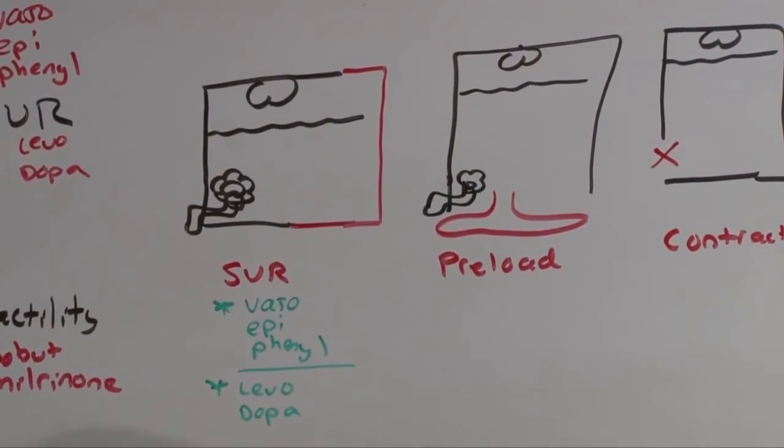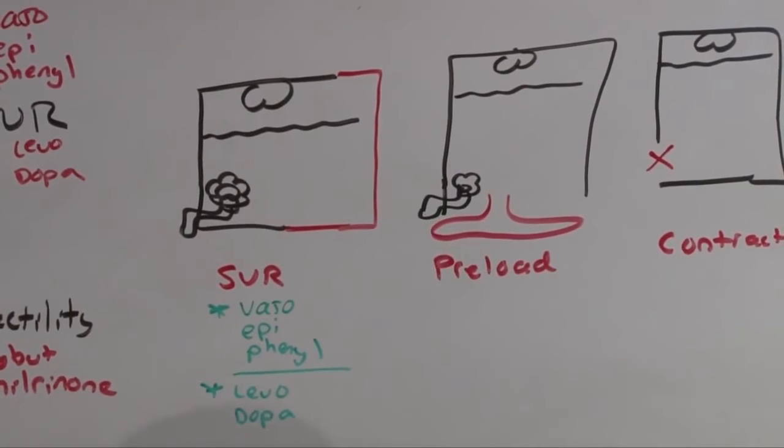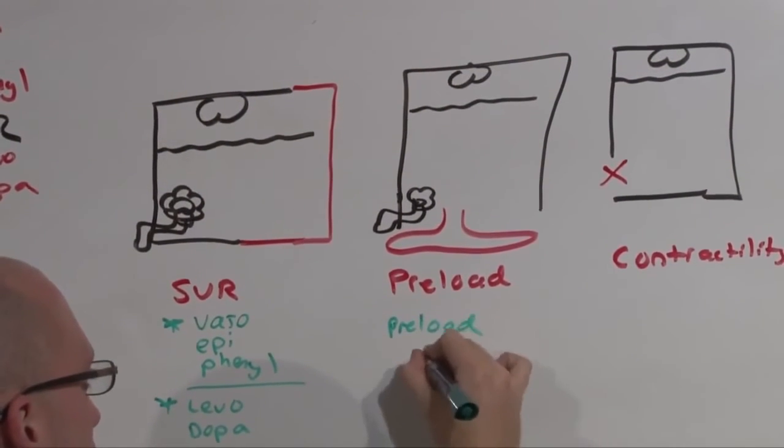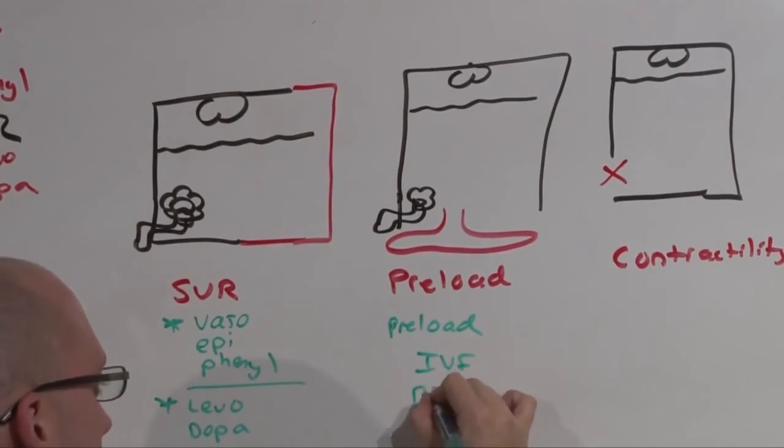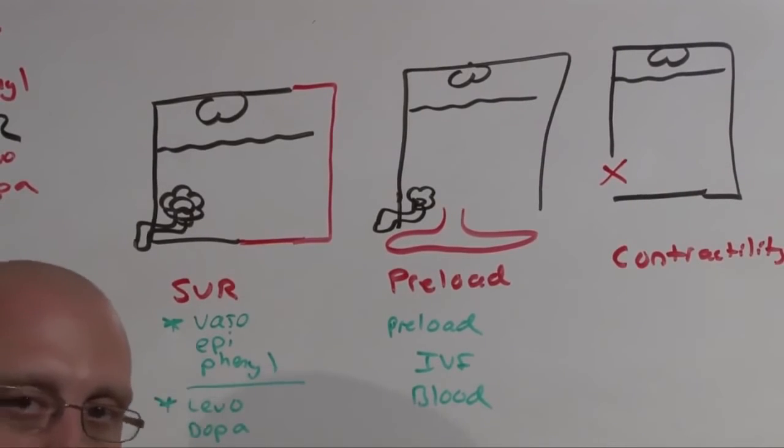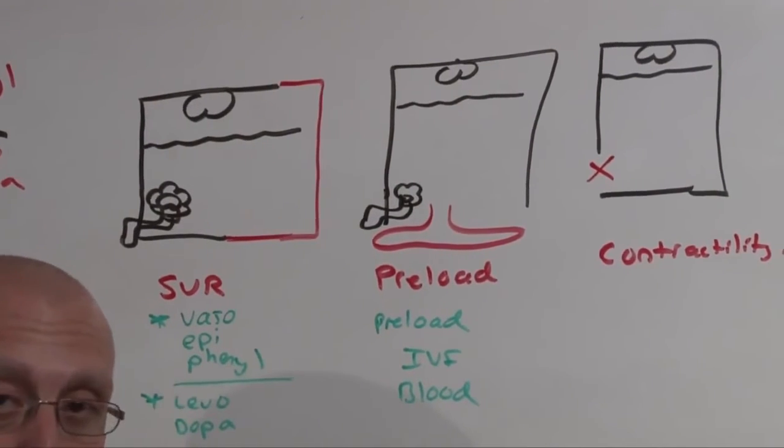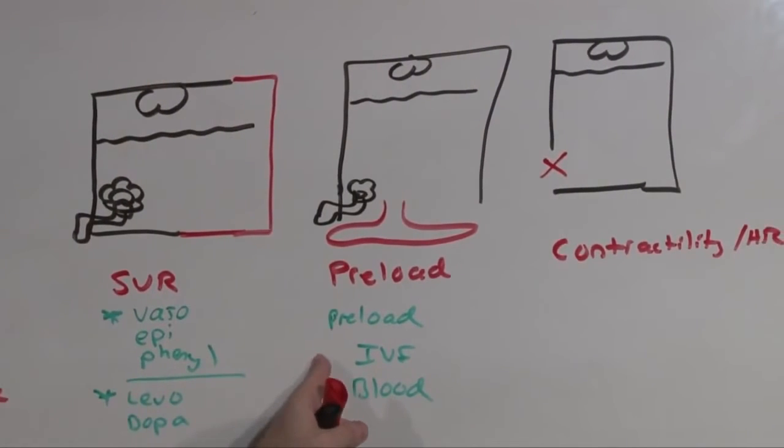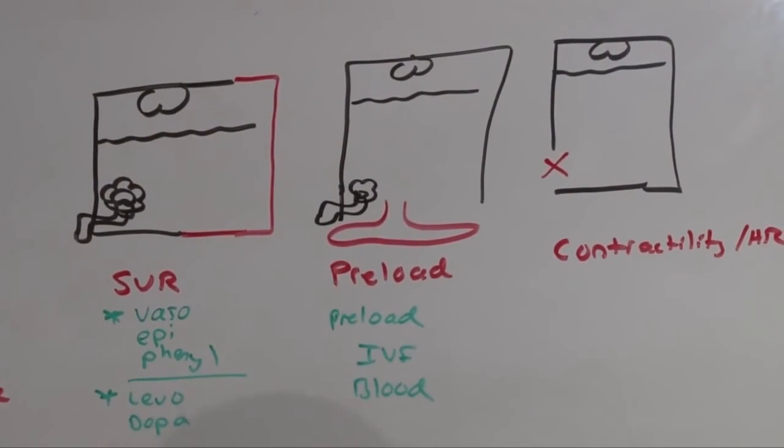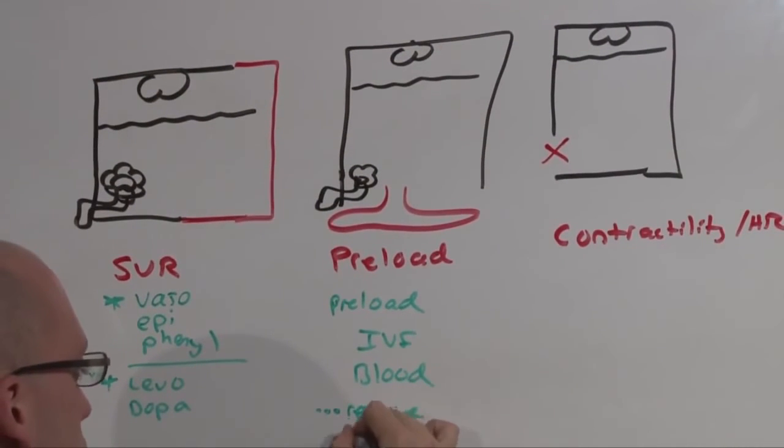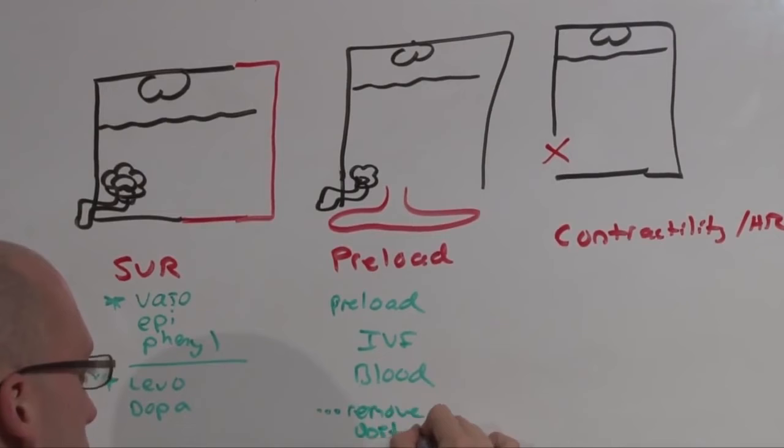If there is an issue with preload, what you give is preload. Either intravenous fluids or blood. Which fluids you give, albumin, normal saline, D5W, half normal saline, lactated ringers, is going to be dependent on the particular condition. But you're going to give some preload to support the preload, and then remove the obstruction if one exists.